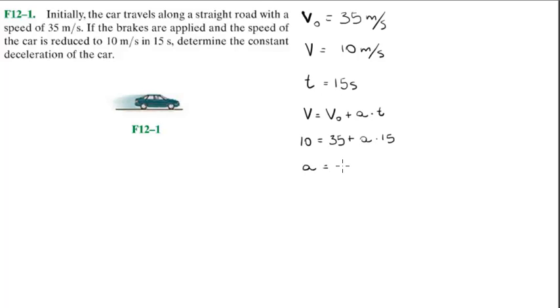So A is going to come out to be 10 minus 35 over 15, which comes out to be negative 5